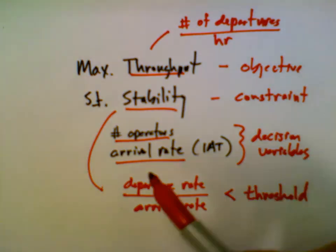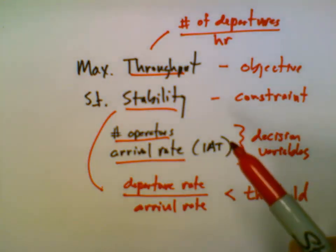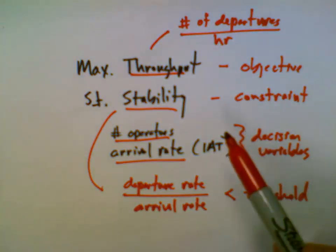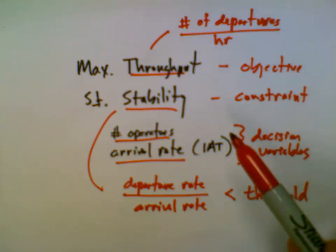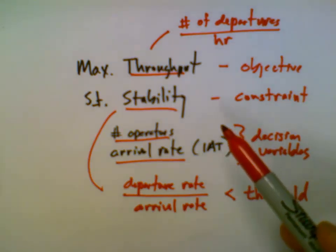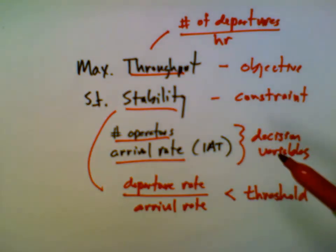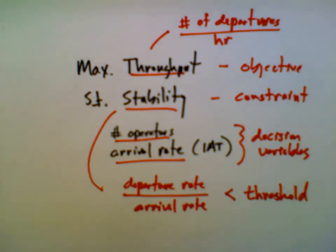As a secondary objective, we'd like to minimize the number of operators. We've already shown that we need more than one operator to achieve stability, and we know we don't need more than four — since once we have one operator per station, any additional operators would be idle. What we don't know is whether we need two, three, or four operators, so we'd like to incorporate that as a secondary criterion.